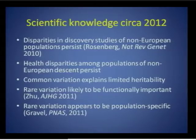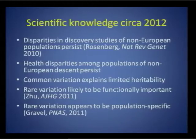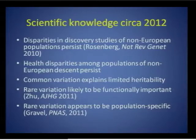The state of science has changed a lot since 2007. Discoveries in non-European populations continue to lag, as do the health disparities in these populations. The more we learn from GWAS, the more we realize that common genetic variation explains a limited proportion of heritability of complex disease. Increasingly, data are accumulating that rare variation is not only likely to be functionally important, but population-specific as well. All of these observations suggest that having a resource of phenotyped and sequenced non-European populations would be broadly useful for the scientific community.